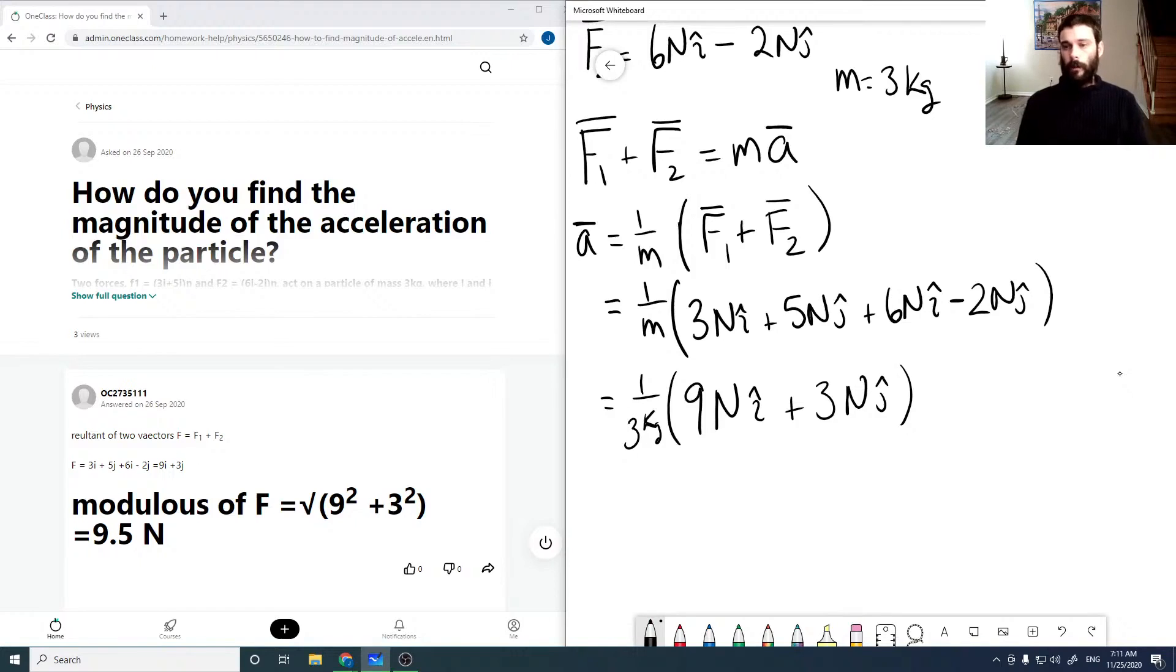And remember, a newton is a kilogram meter per second squared. So the kilogram here will cancel with that, leaving us with meters per second squared. So 9 over 3 is just 3, and 3 divided by 3 is just 1. So there's our acceleration vector.